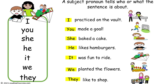Begin by introducing kids to the seven subject pronouns: I, you, she, he, it, we, and they. Explain that they replace a noun as the subject, then read each sentence: I practiced on the vault. You made a goal. She baked a cake. He likes hamburgers. It was fun to ride. We planted the flowers. And they like to shop.